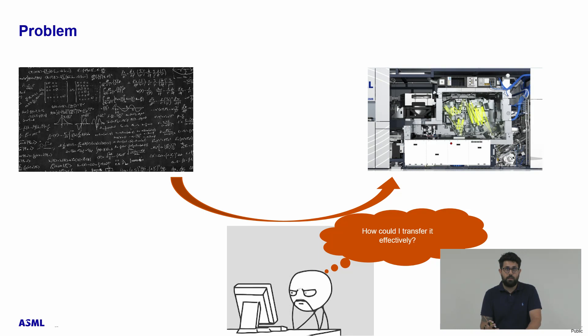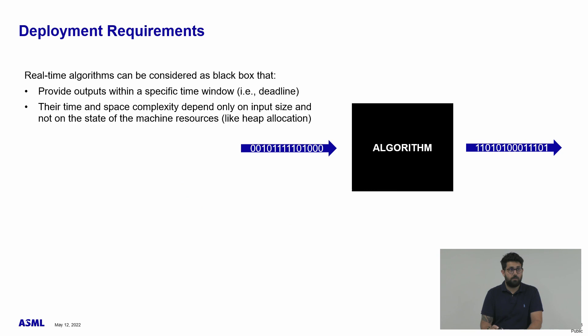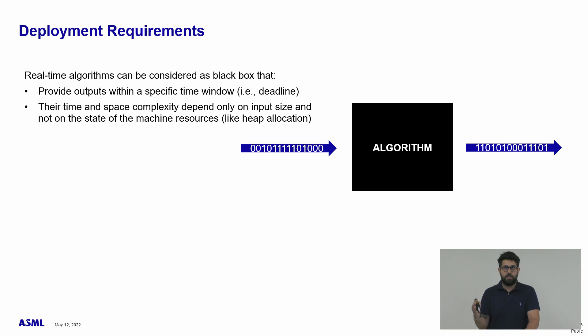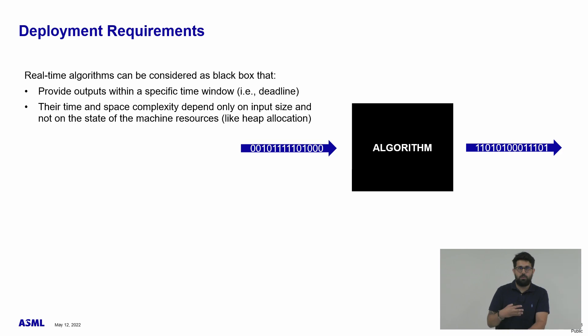The main challenge, however, is to ensure that what is generated from the Julia code can be executed in real-time environments, which have many restrictions compared to normal offline scripting tools. Real-time algorithms can be considered as black boxes with the following constraints: timing constraints, because a real-time algorithm needs to produce its output within a certain time window; and efficiency constraints, where the time and space complexity of the algorithm depends only on the input sizes and not on the state of the operating system or the language runtime. We want strong guarantees that the memory is acquired upfront.